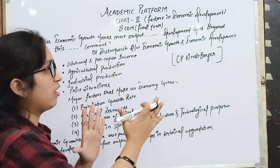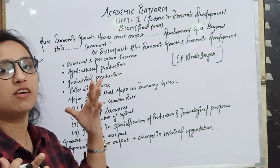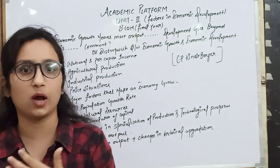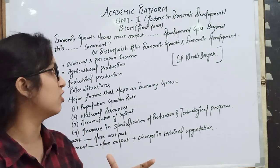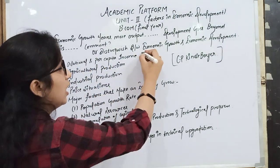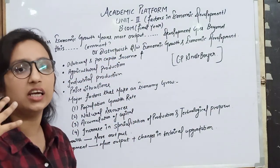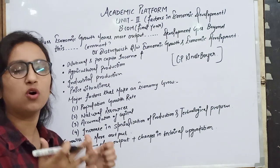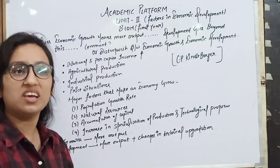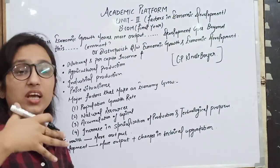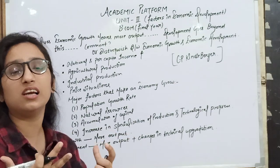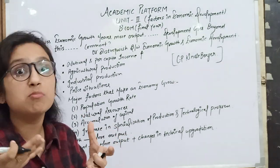Our famous economist C.P. Kindleberger has defined the distinction between economic growth and economic development. When we talk about economic development, we talk about national and per capita income. If per capita income increases, and every person is earning a handsome income with a good standard of living, this drives the whole country's growth. With our national income, our GDP will increase and our national income will increase because our per capita income is raised.